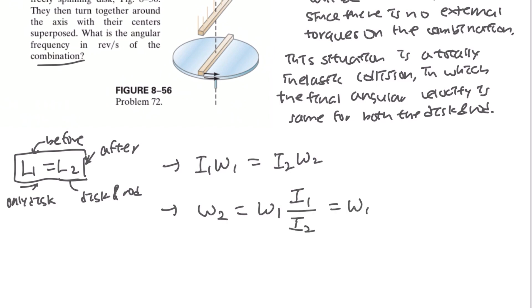And then this would be omega1 and I1 would be the disc, right? So I1 would be the disc, and I2 would be disc and the rod, so it would be I_disc plus I_rod.